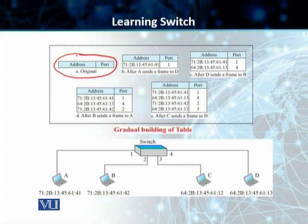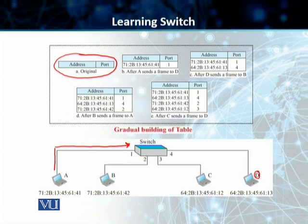In the first instance, let's suppose A sends a frame to D. This is the direction of your data — it is going to the switch and it's destined for D. Because this switch does not know which port station D is connected to, it will broadcast this data out through each of the ports that are connected. So it's received at port 1, sent out through port 2, sent out through port 3, and sent out through port 4.